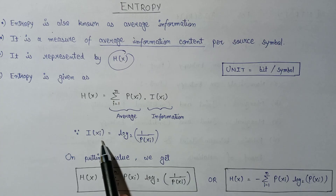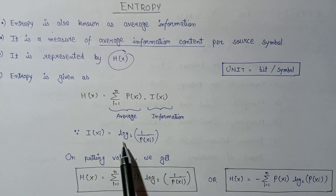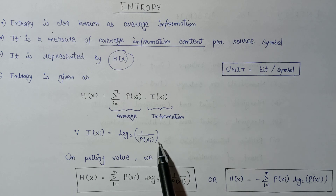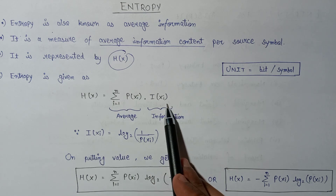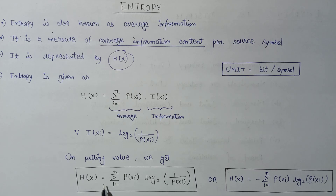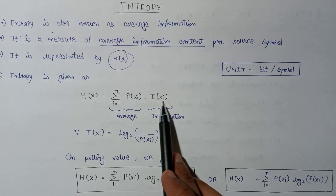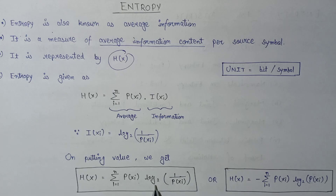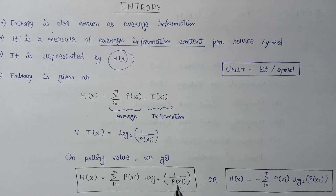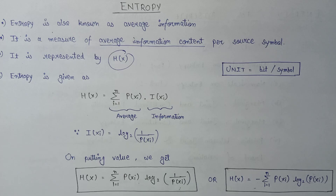We know that the value of information content I(xi) equals log base 2 of 1 over p(xi). Substituting this into the expression, H(X) equals summation from i equals 1 to n of p(xi) times log base 2 of 1 over p(xi). Using the log formula, this becomes the negative summation from i equals 1 to n of p(xi) log base 2 of p(xi). These are the two formulas for calculating entropy, or average information.